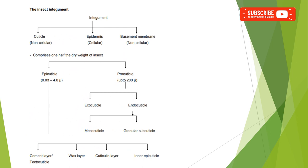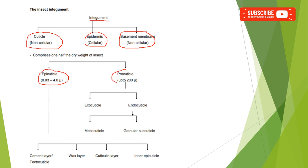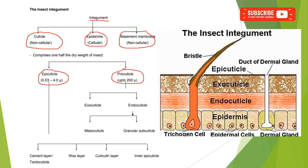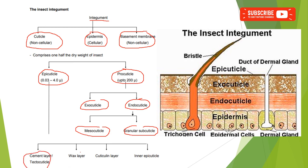Now we can look at the detailed classification of this integument. It is classified into three layers: cuticle (non-cellular layer), epidermis (cellular layer), and the basement membrane (non-cellular layer). The cuticle is divided into two layers: epicuticle and procuticle. The procuticle is further divided into exocuticle and endocuticle. The endocuticle is divided into mesocuticle and granular subcuticle. The epicuticle is divided into four or five layers: cement layer, wax layer, cuticlin layer, inner epicuticle, and outer epicuticle.